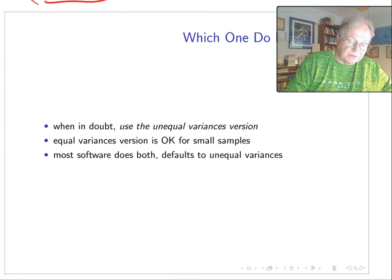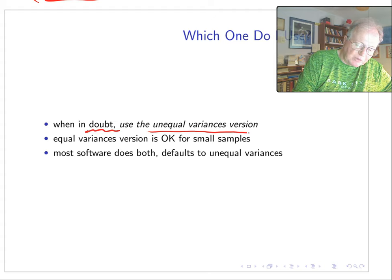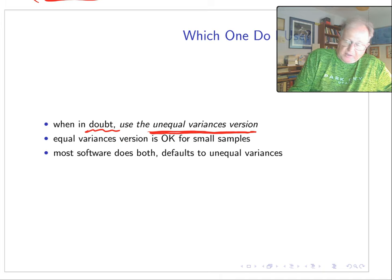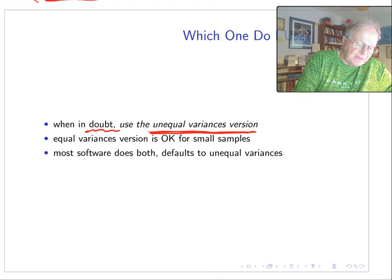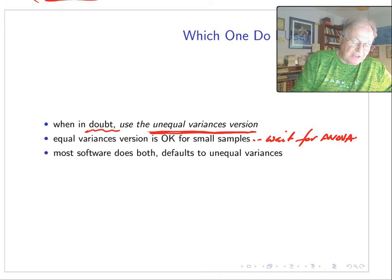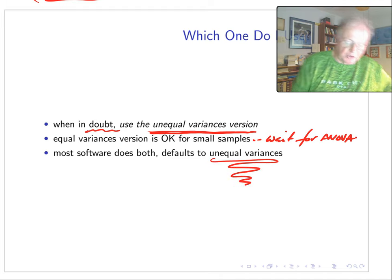Now which one do I use? Which one do I use? Well, learn it out: use the unequal variances version. Okay, the equal variance one, to be honest, requires you to check whether or not the variances are equal—so that's two tests instead of one. Why not just jump in and do the one test? Okay, equal variances is okay for small samples, and I'm going to say wait for ANOVA because you're going to see it used in small samples. Now most software does both and defaults to the unequal variances. So that's the one that all the cool kids are using these days.